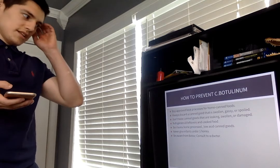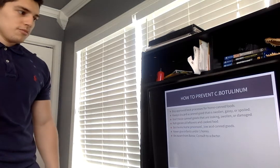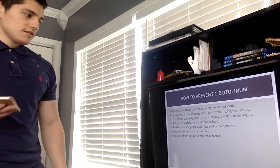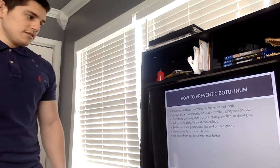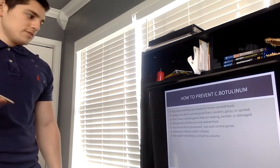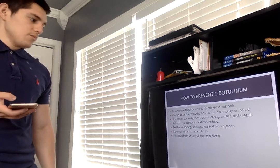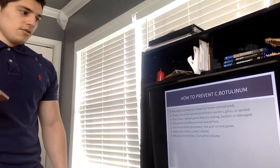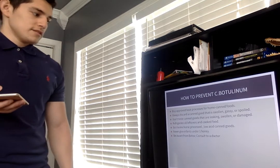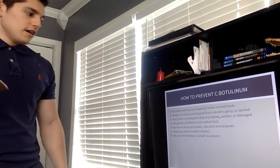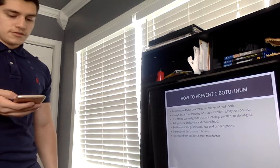How to prevent botulinum? Buy approved heat process for home canned foods. Always discard a canned good that is swollen, gassy, or spoiled. Don't taste canned goods that are leaking, swollen, or damaged. Refrigerate all leftovers and cooked food. Boil home processed low acid foods like asparagus, corn, and beets. Never give infants under one honey. Be aware of Botox. Consult a doctor.